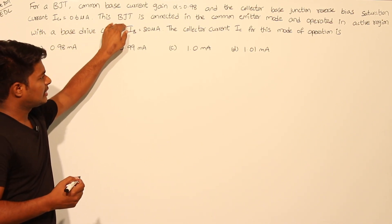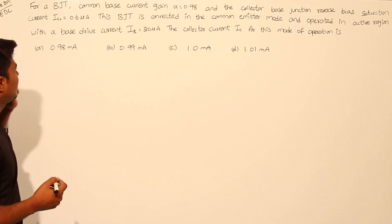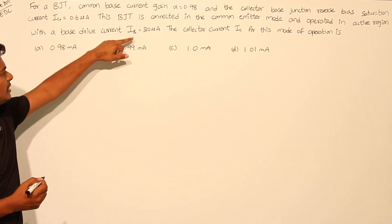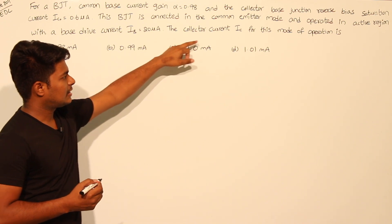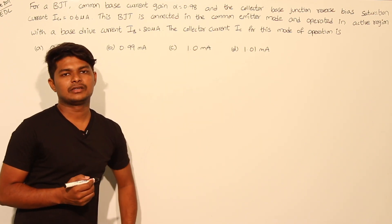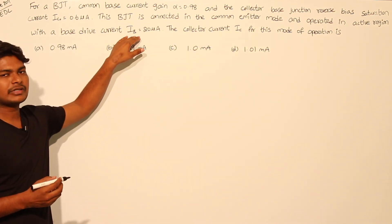This BJT is connected in common emitter mode and operated in active region with a base current IB equal to 20 microamps. Find the collector current IC for this mode of operation. Given in the question are some of the parameters.